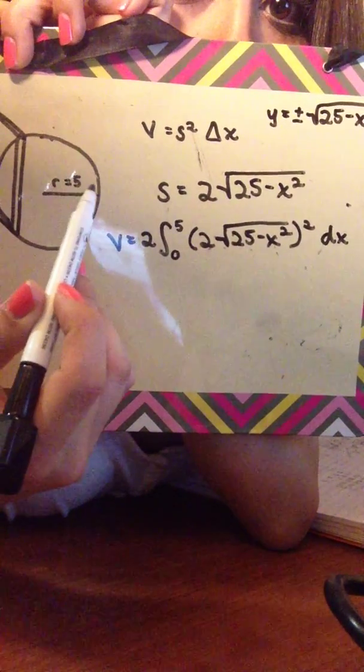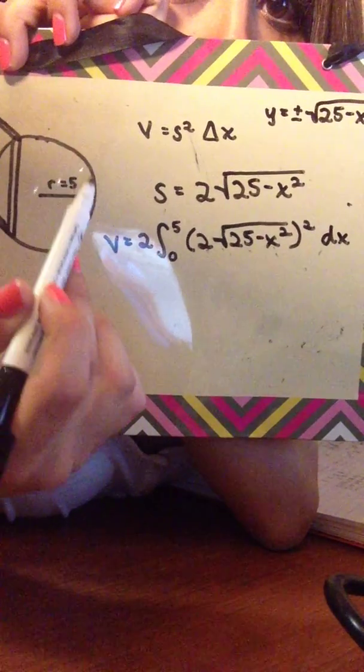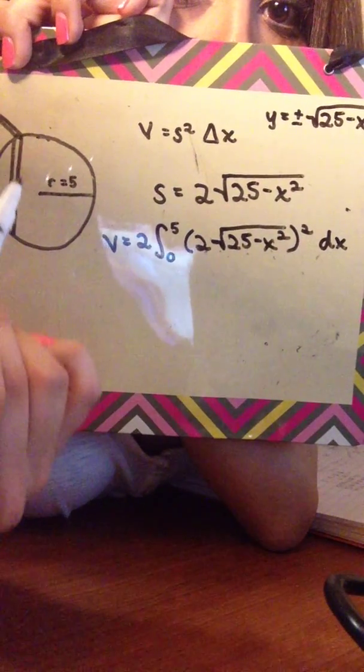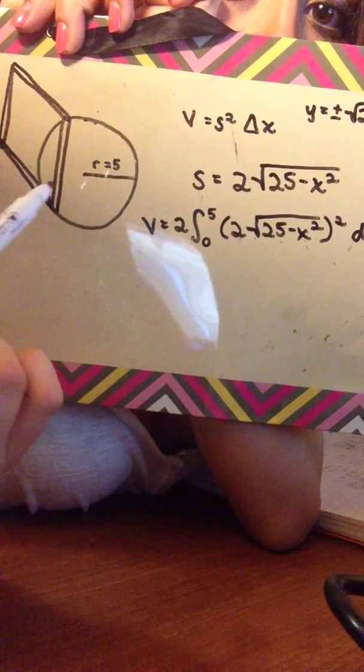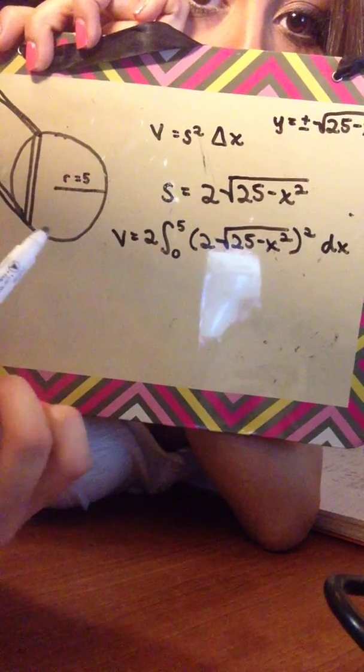With your integral, you're taking the volume from here to here and doubling it to get the entire solid. You take 2 times the side and square that to get the area of the base, then multiply by the change in x as the thickness. From there you can plug that into your calculator, and the volume comes out to 2000 over 3.